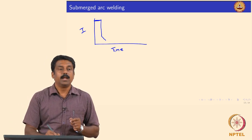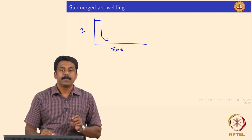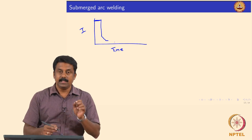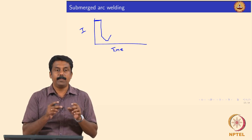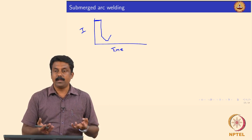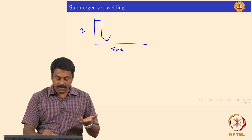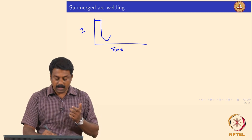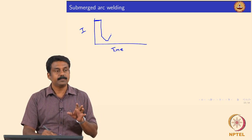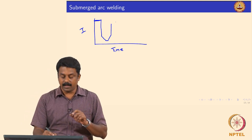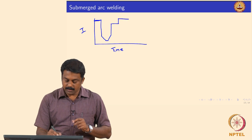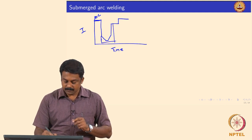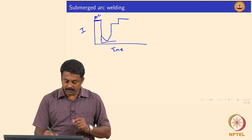The current is decreased considerably to maintain the droplet intact, and then we give a delay. During that delay, we immerse the droplet in the pool and subsequently retract the wire. During this process we increase the current slightly so that we form a neck, and then because of the surface tension of the liquid pool, the droplet can be detached into the pool. Once the wire is retracted back and reaches a typical arc length, we increase the current again to ignite the arc and repeat the same steps. This is the arcing current phase, and then this is the short circuiting phase.